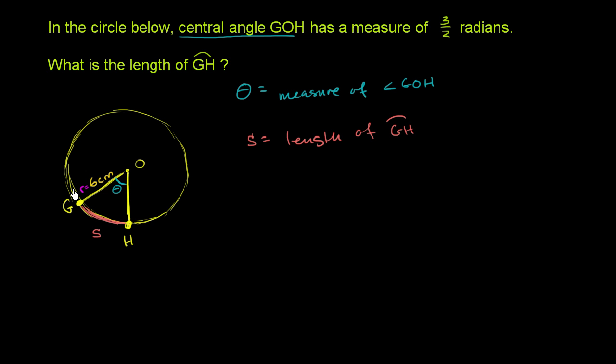The first thing that we should think about when we're dealing with arc lengths and radians is how do angles measured in radians relate to arc length? In particular, how does an angle measured in radians relate to the length of the arc that subtends that angle? In this case, the length of this arc, arc GH, subtends angle theta, subtends central angle GOH. So what's the relationship?